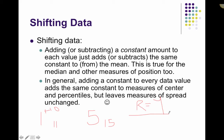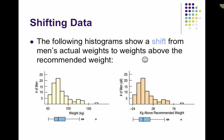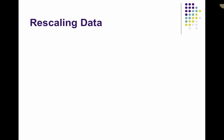So when you shift data, it'll change any measure of position but leave any measure of spread alone. For example, the following histograms show a shift from men's actual weights to weights above the recommended weight. The distribution is unimodal and skewed to the right with a median around 75 and a few outliers. If we shift this by subtracting the recommended weight, we end up with a different scale but the distribution remains the same — still unimodal and skewed to the right — and the median was just shifted by that recommended weight.